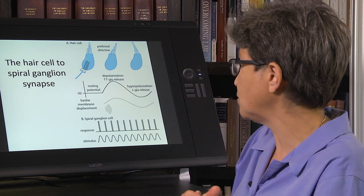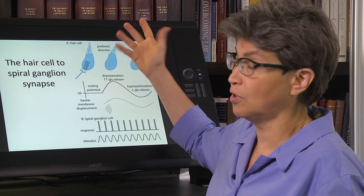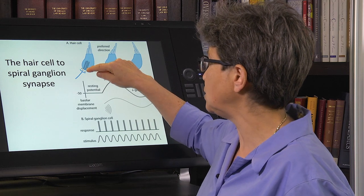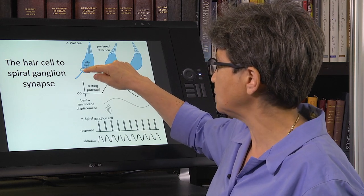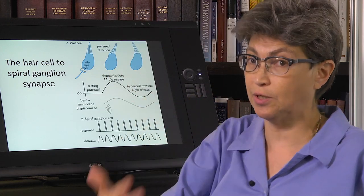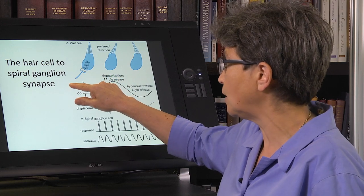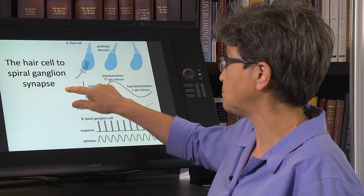And the same is true of the hair cell. It doesn't have an axon, it's not a neuron anyway, it is just releasing transmitter. And it's releasing transmitter on, in this case, now we're talking about the inner hair cell, so it's releasing transmitter onto a neuron, a peripheral neuron that sits in the spiral ganglion.